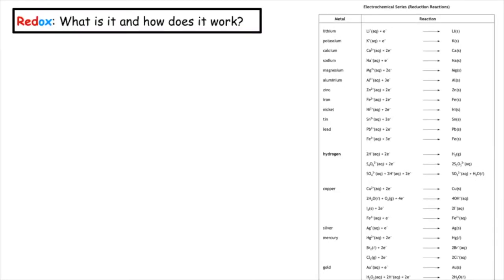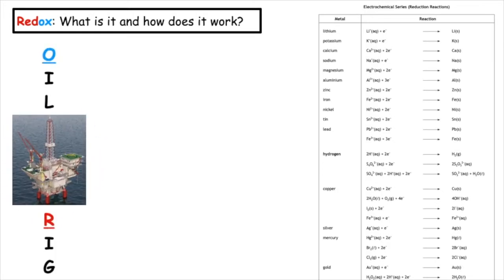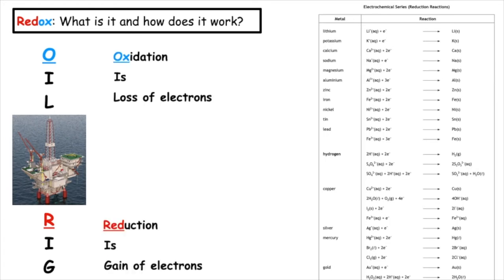So redox — what is it and how does it actually work? There's a little story that we use in chemistry to help us remember what is what, and the story we use is OIL RIG: Oxidation Is Loss of electrons and Reduction Is Gain of electrons.